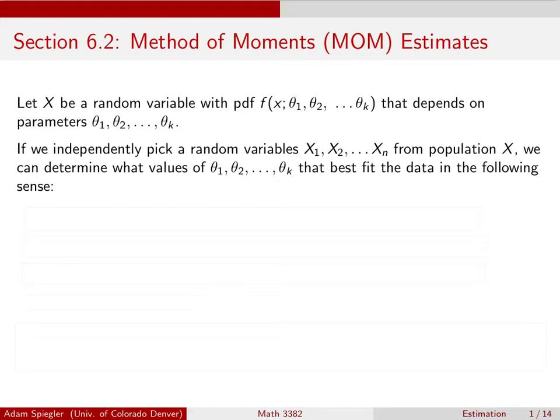The method of moments will determine the values of theta_1 up to theta_k so that our PDF best fits the observed data. We start by requiring that the mean of the population X equals the mean of the sample — whatever parameters we choose must give us the same mean as what we observed.